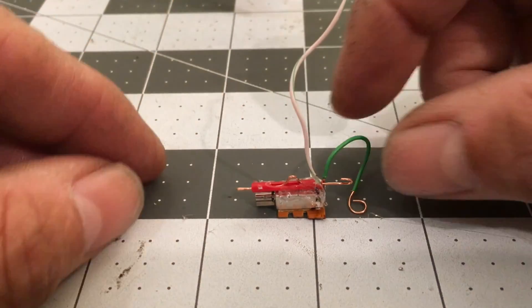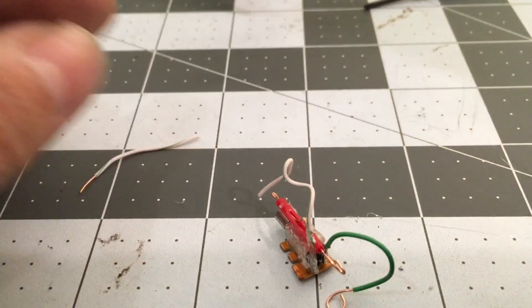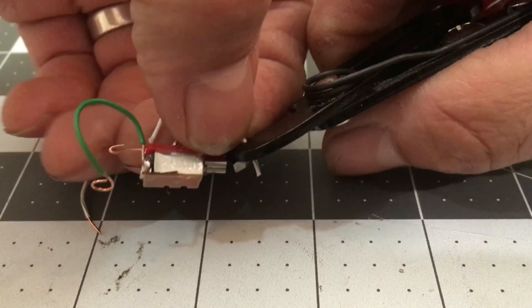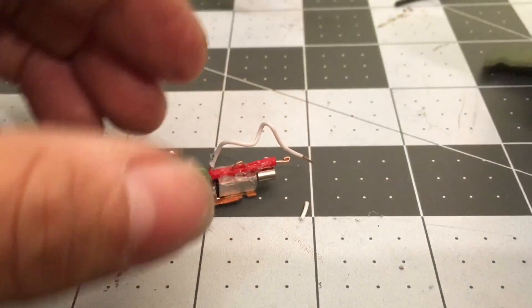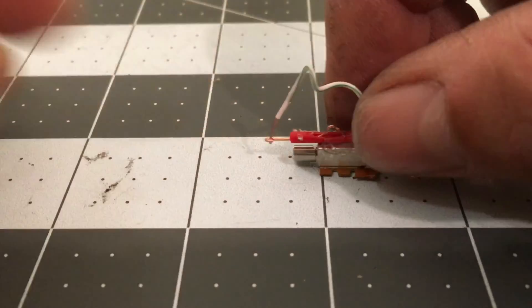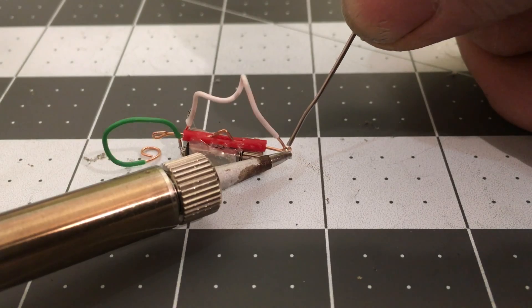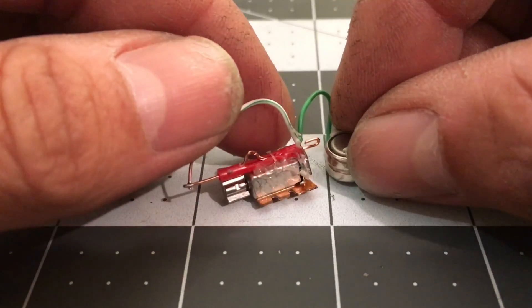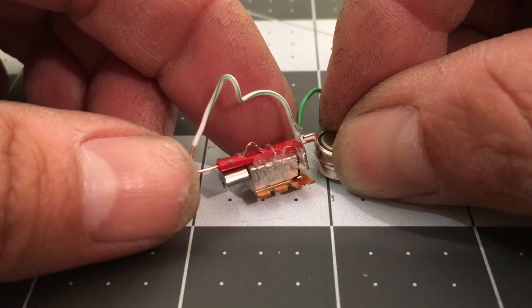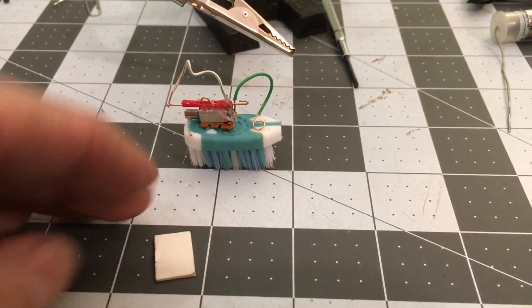I'm going to take the other lead and trim it to length. Once I get that stripped, I'll connect it to the back side of the switch and gently solder it in position. Before I put it on the brush head, I'll check it against the battery to make sure everything functions properly.